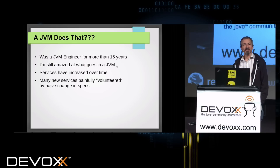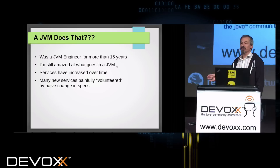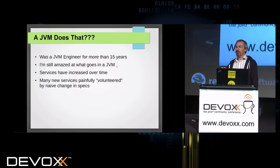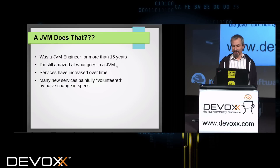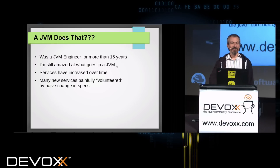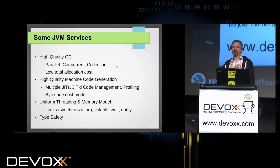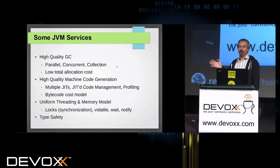There's a huge count of services that have sort of increased slowly over time. Many of the services are sort of painfully volunteered by very naive changes in the spec. Finalizers and what they did to garbage collection was just awful. Somebody had a cool idea, they changed the language, and the impact in the JVM was enormous. If you look at a JVM and what goes on, you find a bunch of interesting parts — the whole is greater than the sum of the parts, but the parts themselves are interesting.